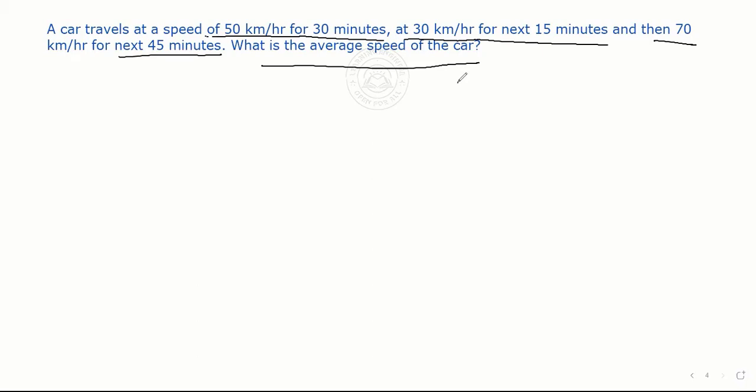The car travels at different speeds for different times. We need to find the average speed. First, the velocity v1 is 50 kilometer per hour, and the car travels at 50 kilometer per hour for 30 minutes, so t1 is 30 minutes.